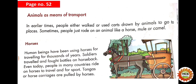Let's start from horses. Human beings have been using horses for traveling for thousands of years. Soldiers traveled and fought battles on horseback. Even today, people in many countries ride on horses to travel and for sport. Tongas or horse carriages are pulled by horses, as you can see in this picture.